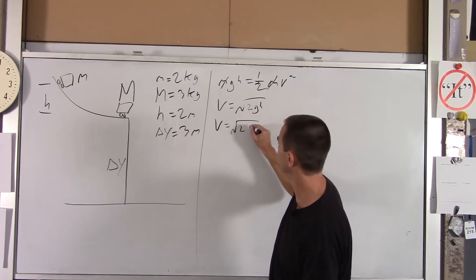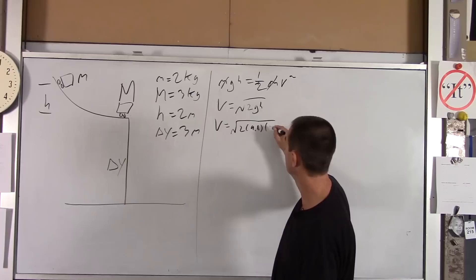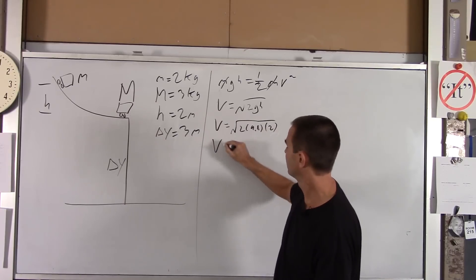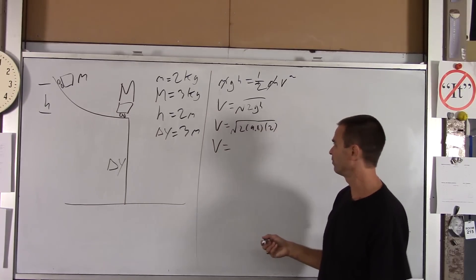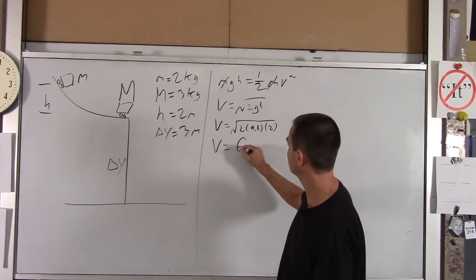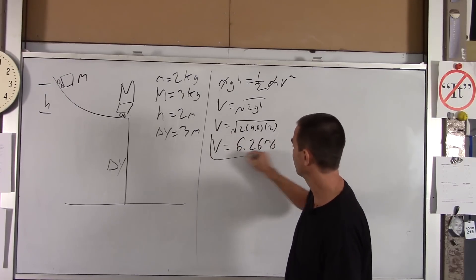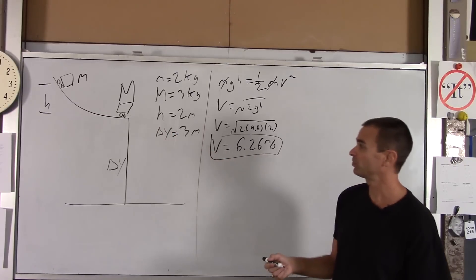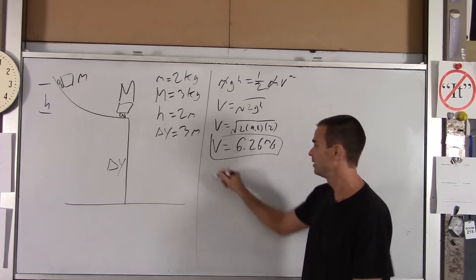Little m's drop out and you get v is root 2gh. And we can get a number off that. You get root 2 times 9.8 times the height, which was 2. So that's roughly root 40, just under that. And if you do the math, you get 6.26 meters per second. So that's the speed with which the little guy strikes the big guy.